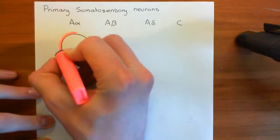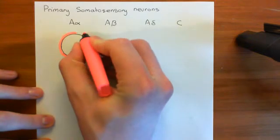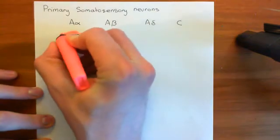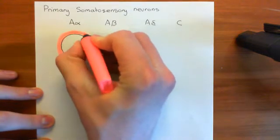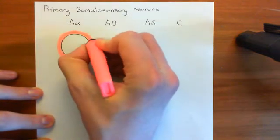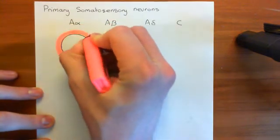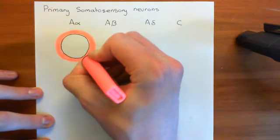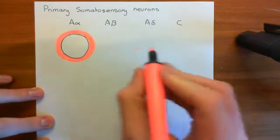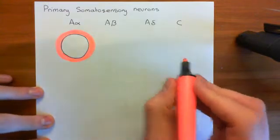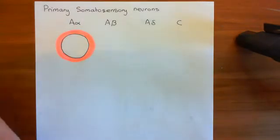These A-alpha neurons have an incredibly thick diameter of around 20 micrometres. They also have a very thick covering of myelin, so they are myelinated. This means that the action potential can jump from node of Ranvier to node of Ranvier by saltatory conduction, and that hugely speeds up conduction of the action potential along the axon.